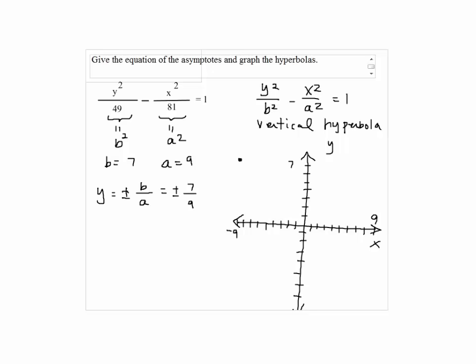And we plot the corners of the rectangles, so we can have a rectangular box, so we can draw an asymptote.